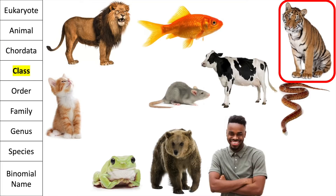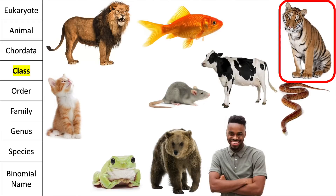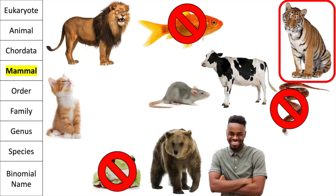So what class does the tiger belong to? Well, tigers are a mammal because they give birth to live young, have hair or fur, mammal mothers nurse their young with milk, and mammals are warm-blooded. The goldfish is a fish, the frog is an amphibian, and the snake is a reptile, so they are not mammals.